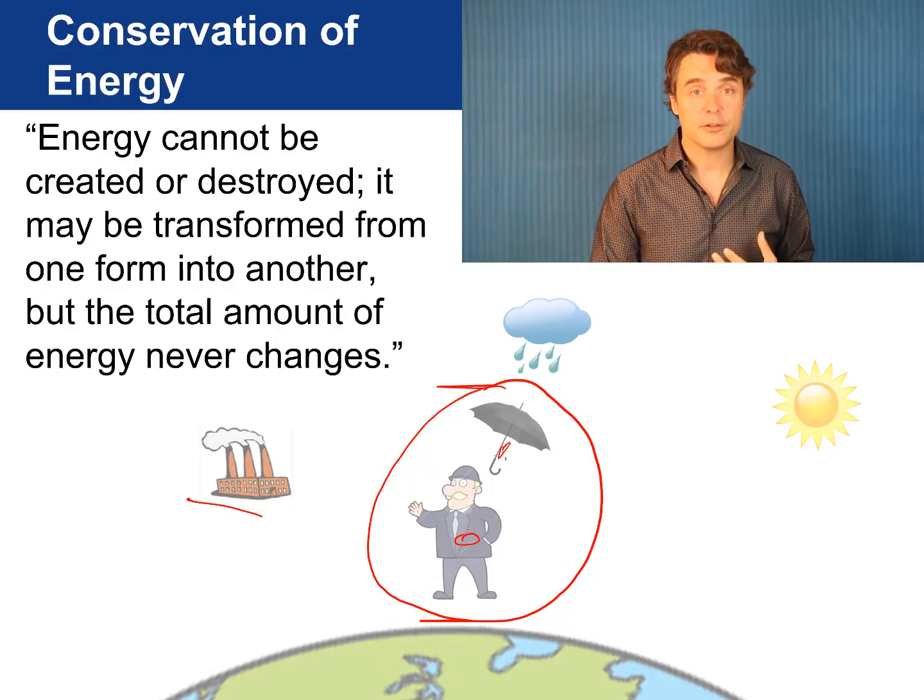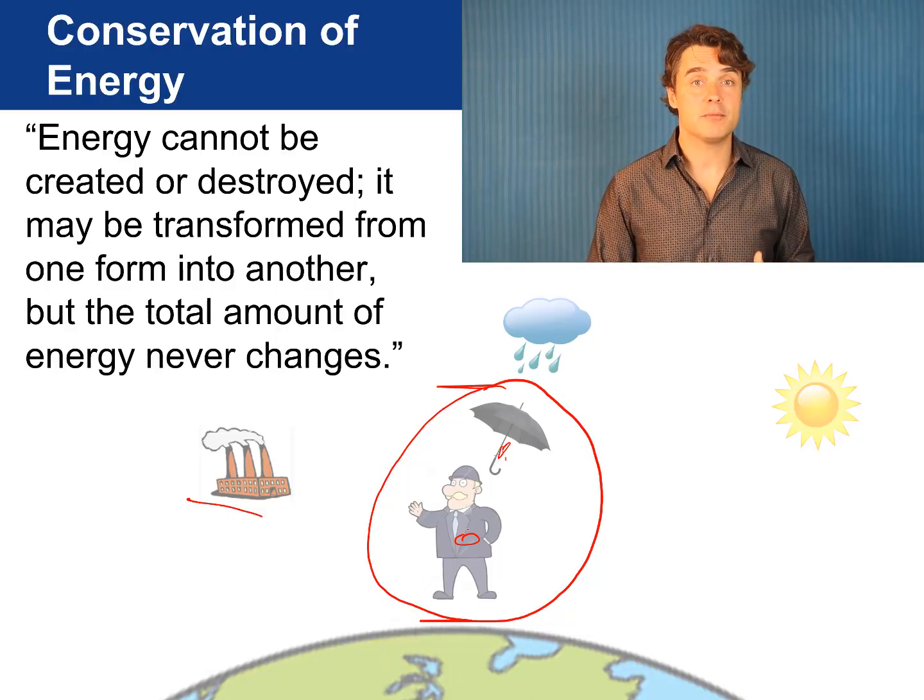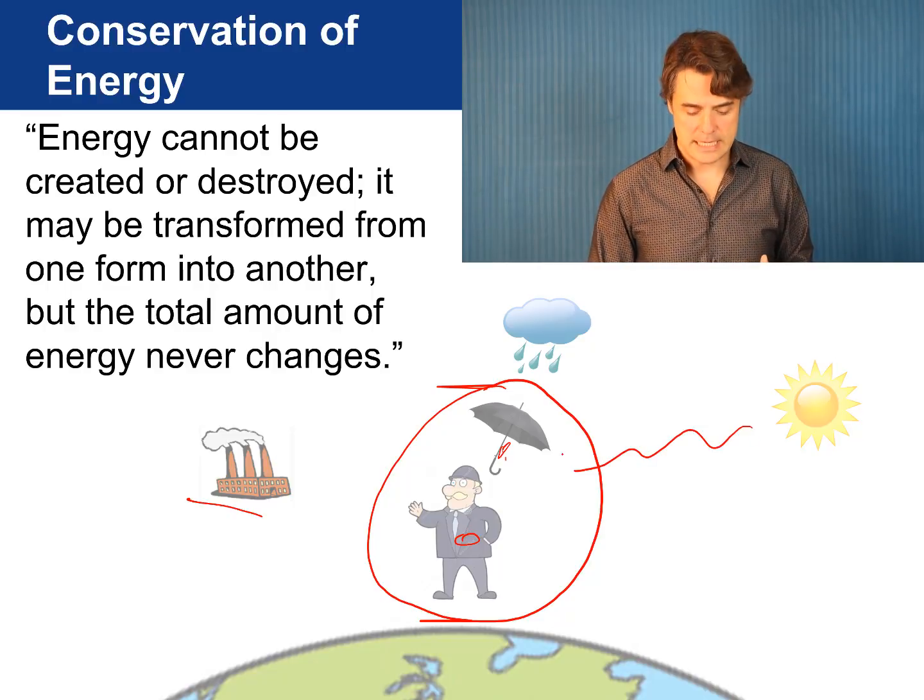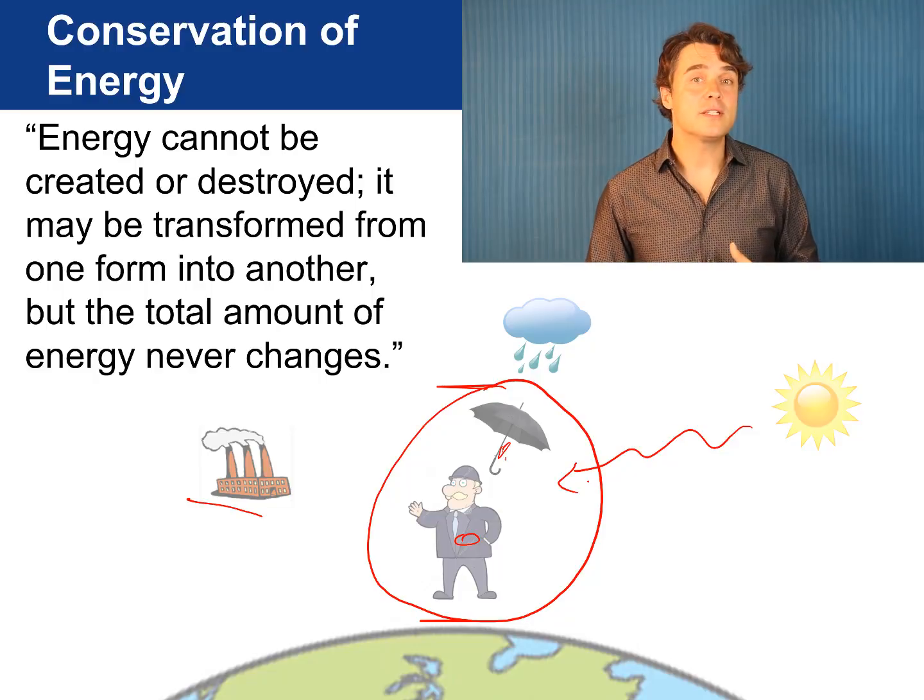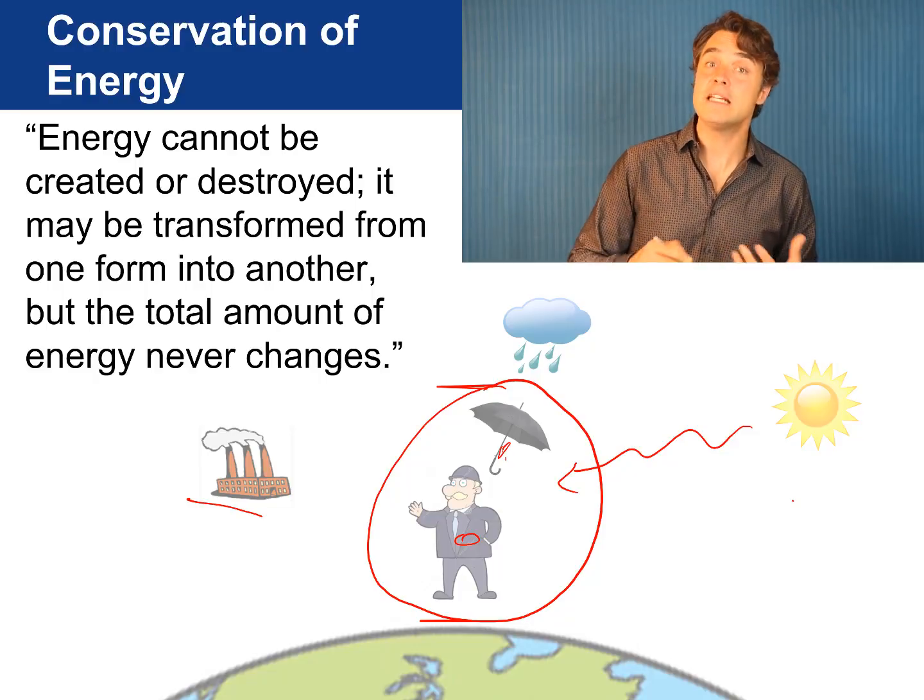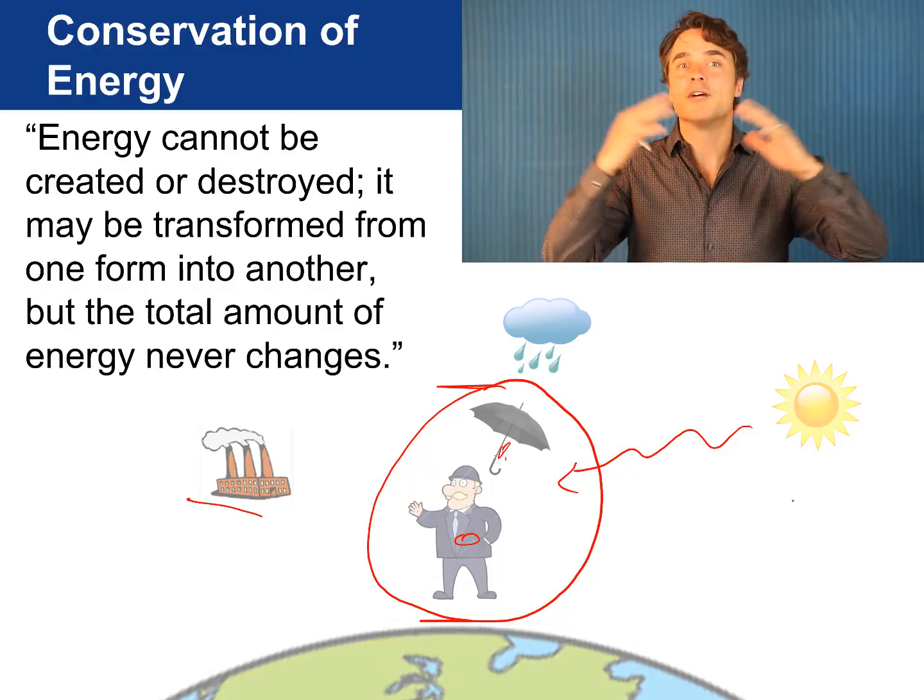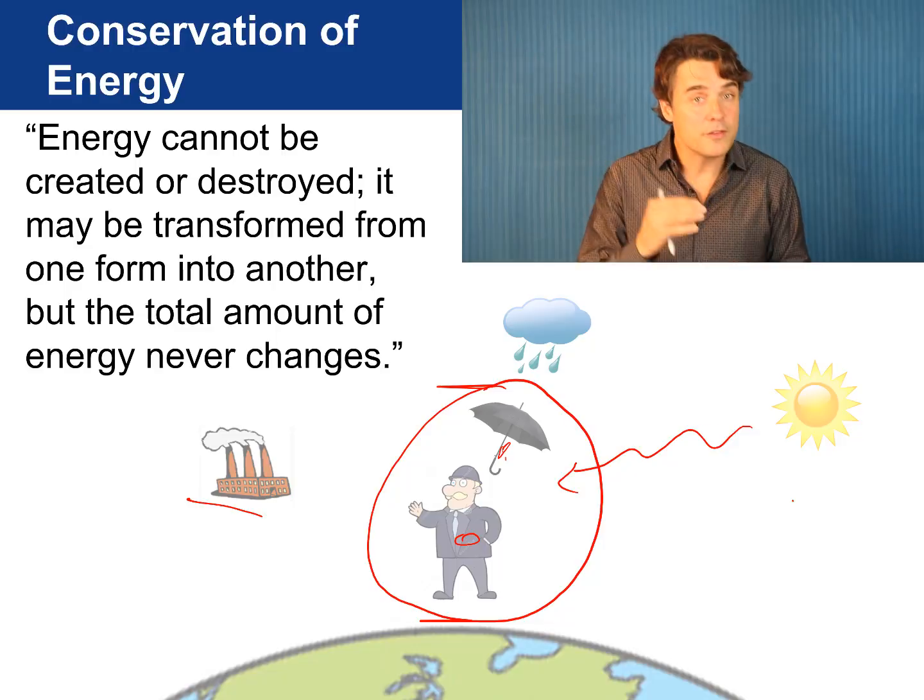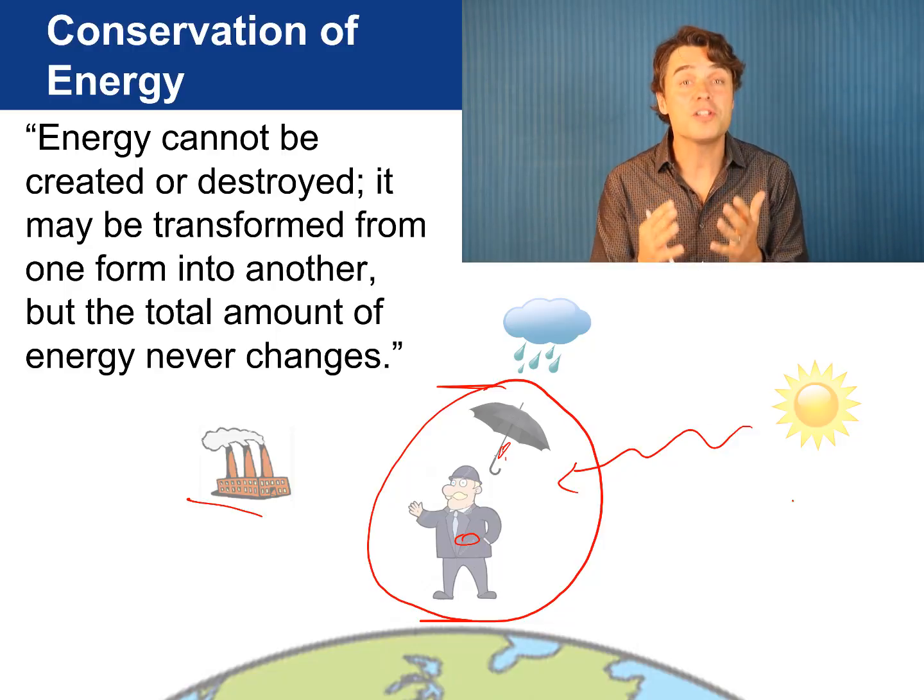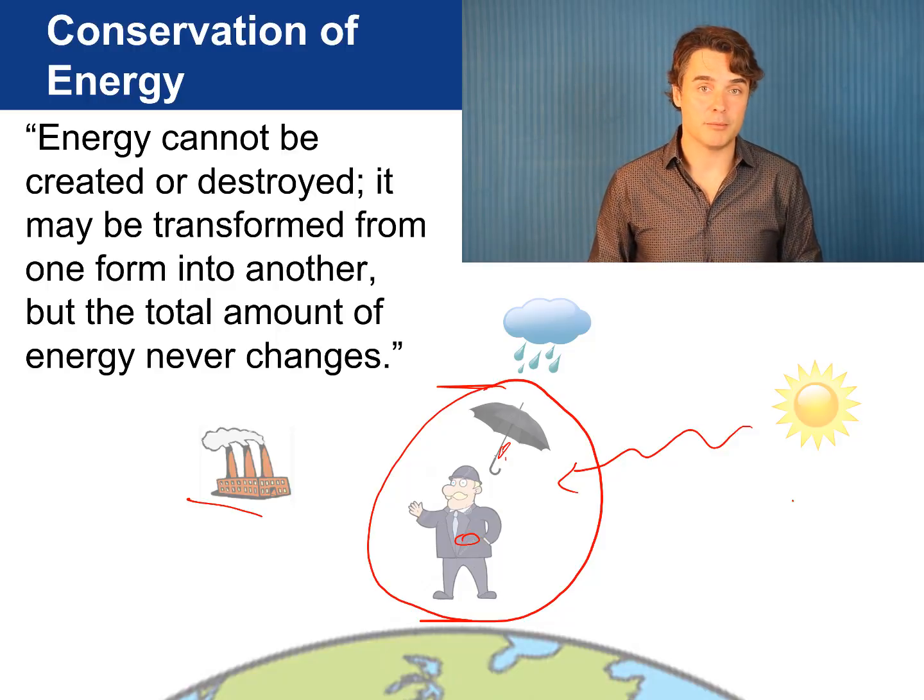And energy can flow in or out of the system when this guy and his umbrella interact with the environment. For example if the Sun heats him up we say that the energy has gone from the Sun into the system increasing the energy of the system. Keeping track of all the energy that flows within a system or in and out of a system is an important tool in physics that will help us solve a lot of practical problems.